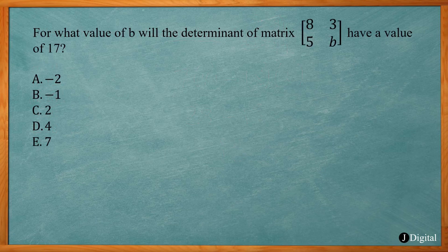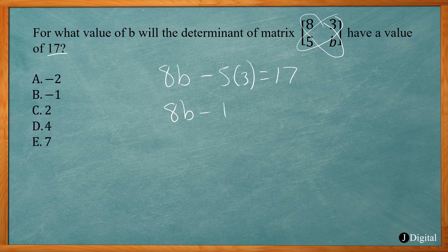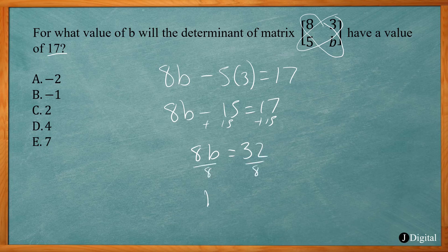For what value of B will the determinant equal 17? The determinant is 8 times B minus 5 times 3, set equal to 17. So 8B minus 15 equals 17. Add 15 to both sides: 8B equals 32. Divide both sides by 8: B equals 4. This problem combines finding the determinant and algebra to solve for a variable. The answer is 4.